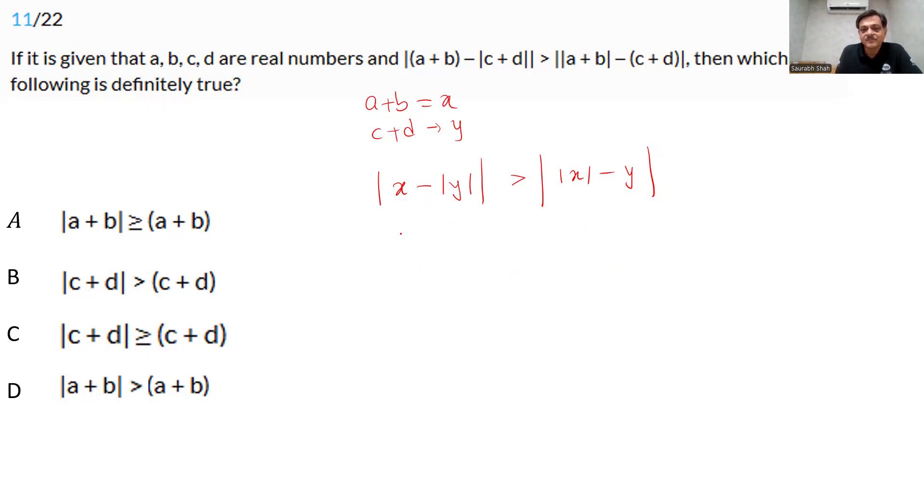The only case left now with us is x is negative, y is positive. Take x as minus 5 and y is simply 7 or 4 or whatever. So minus 5 minus 7 is minus 12 and the modulus becomes plus 12. On the right hand side we will have minus 5 modulus will become 5, minus 7. 5 minus 7 is minus 2 and the modulus is plus 2 but 12 is greater than 2. So this is satisfied. So our case now becomes x is negative, y is positive. a plus b is less than 0, c plus d is greater than 0.